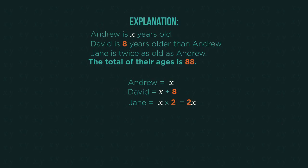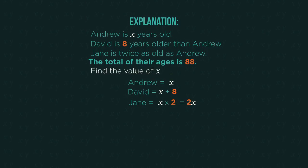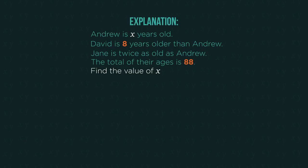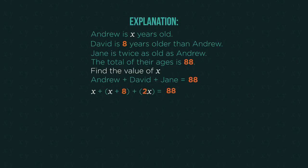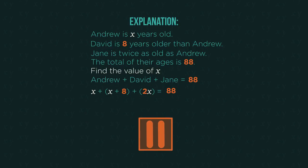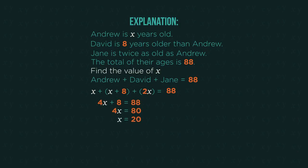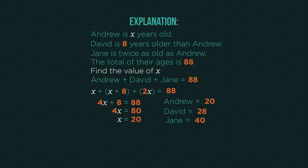Given that the total of their ages is 88, how can we use that information to find X? We know that Andrew plus David plus Jane equals 88. From our earlier working, replace the names with their X expressions, and we have an equation to solve. Pause the video and solve for X. Did you get X is 20? So Andrew is 20, David is 28, and Jane is 40.